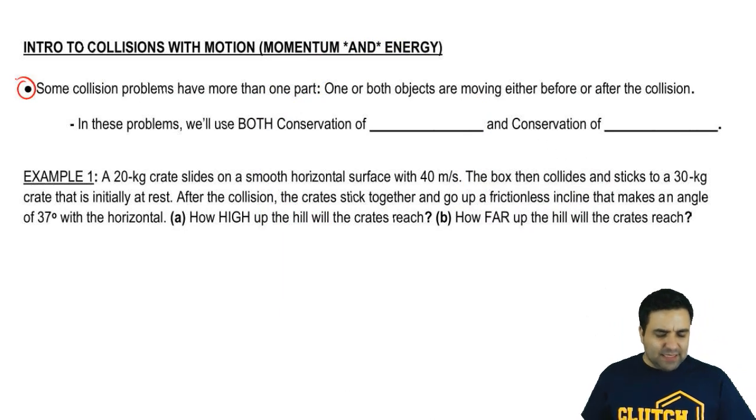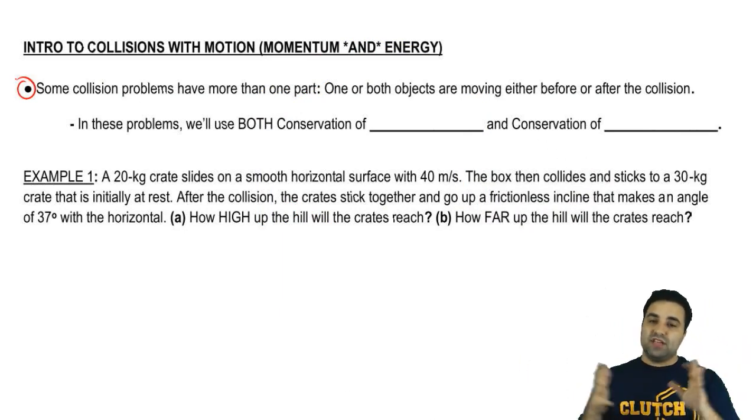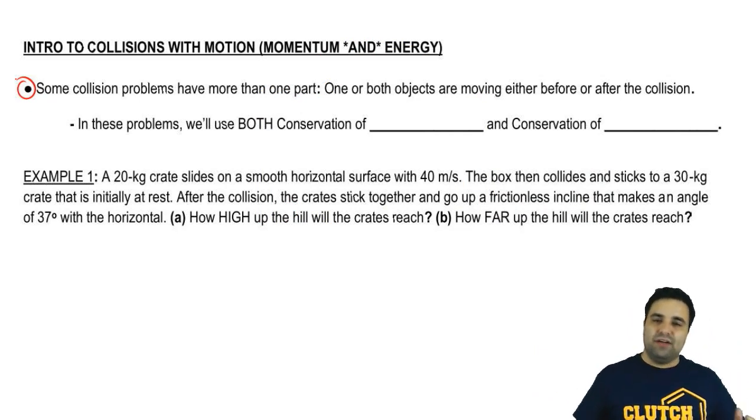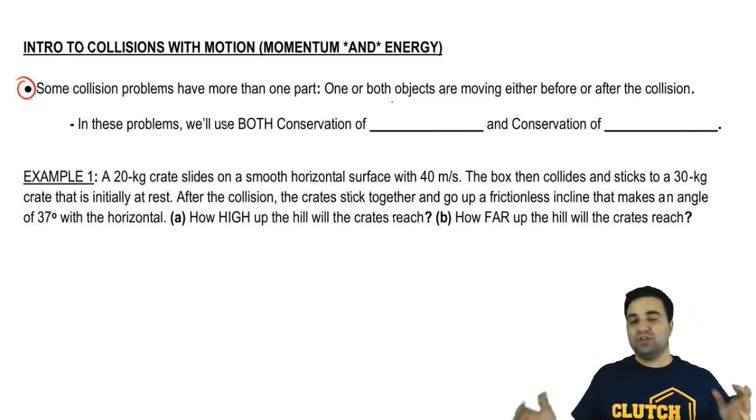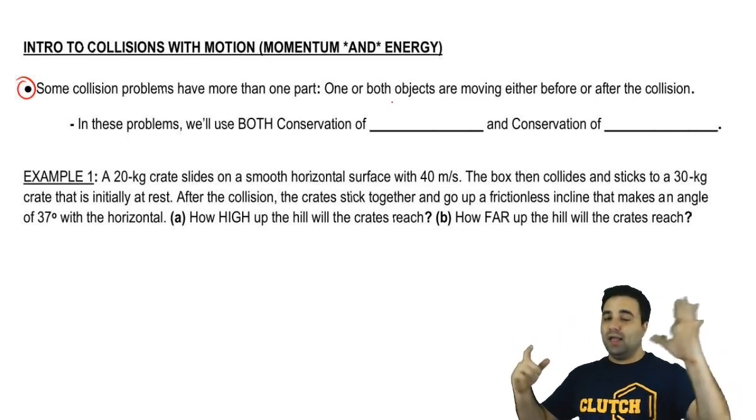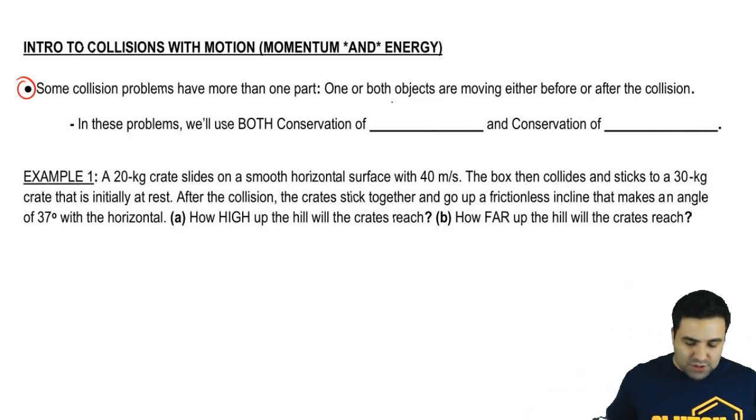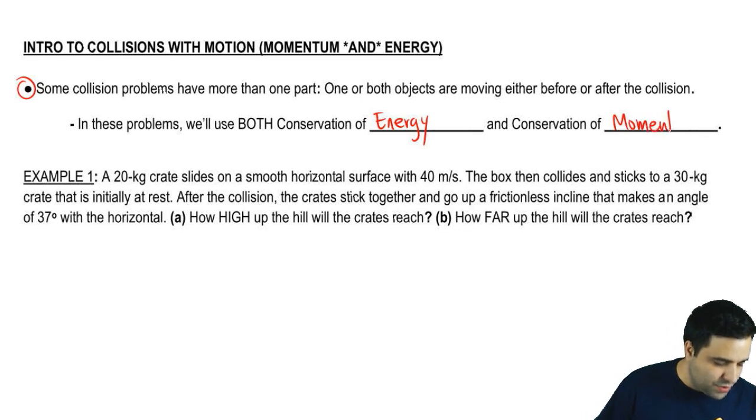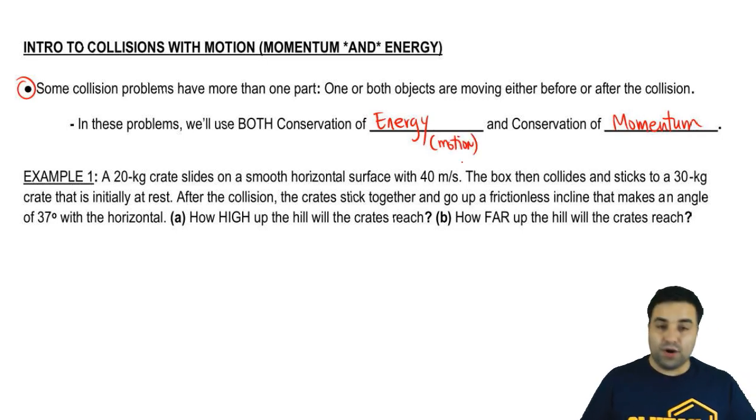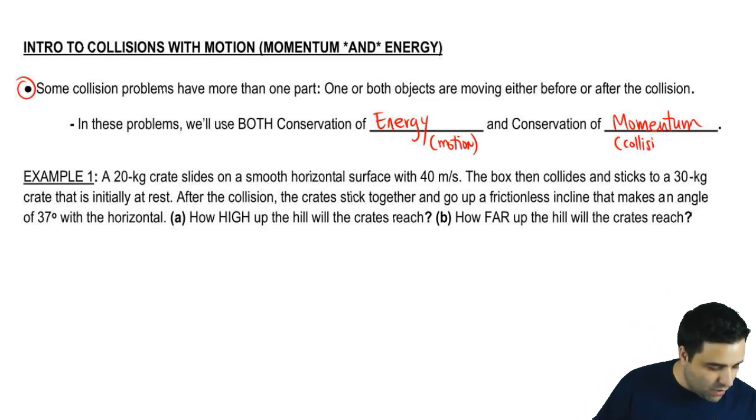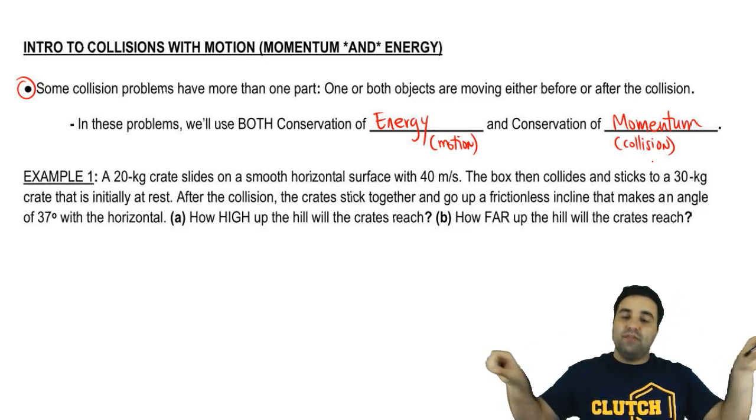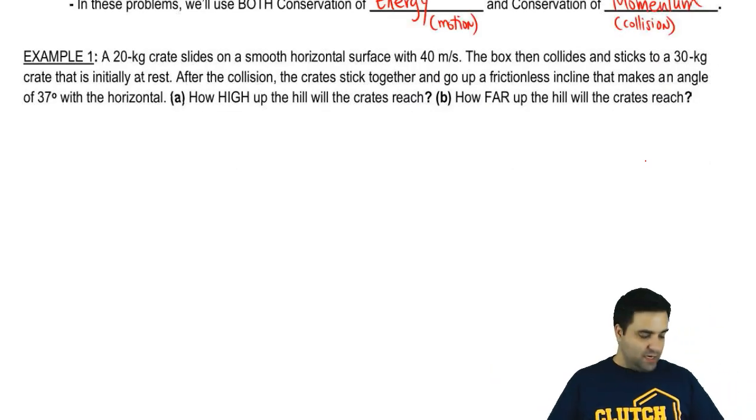Some collision problems have more than one part. Rather than just having a collision, we're going to have some motion either before or after the collision. One or both objects will be moving either before or after the collision. Probably the most common example is a bullet gets shot into a block and this block moves and eventually stops. In these problems, we'll use both conservation of energy and conservation of momentum. Energy will deal with the motion part of the problem, and momentum will deal with the collision or the push away part of the problem. So let's jump straight into the example and show you how this works.